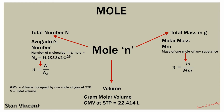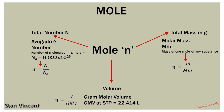If you know the total volume and the volume occupied by one mole at STP, you can calculate the moles by dividing the total volume by the molar volume, which is 22.414 liters at STP. These are the three methods by which you can determine moles in chemistry.